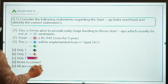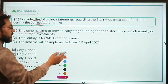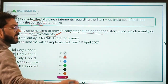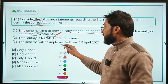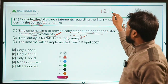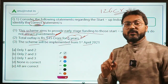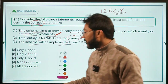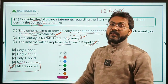Coming back to Question 1 — you need to identify the correct statements. Statement 1: the scheme aims to provide early-stage funding to startups which usually do not attract investments — correct. Statement 2: total outlay is ₹945 crores for 5 years, and ₹126 crores for this year — correct. Statement 3: the scheme will be implemented from 1st April 2021 — also correct. Therefore, option E — all statements are correct — is the answer.